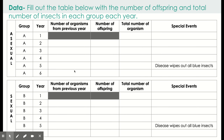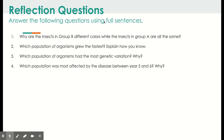In the first column, write down how many organisms are from the previous year, copying that down from the previous row. Then write down how many offspring were produced this year in year two, followed by the total number of organisms in the next column. Continue doing that for all of the rows. Lastly, you will answer the reflection questions, using the data to come up with conclusions.